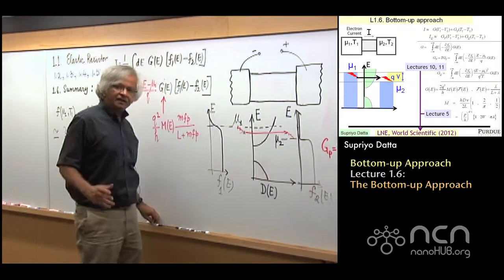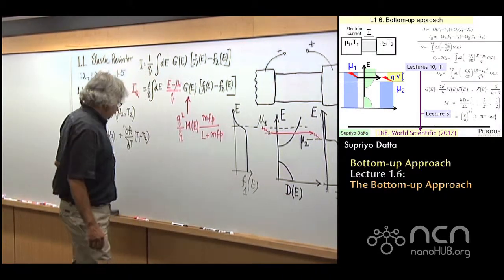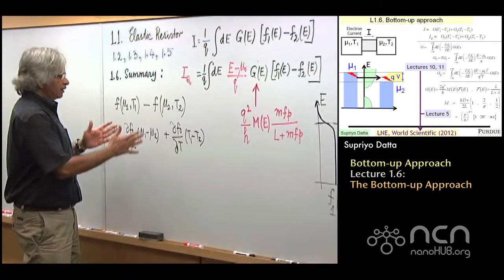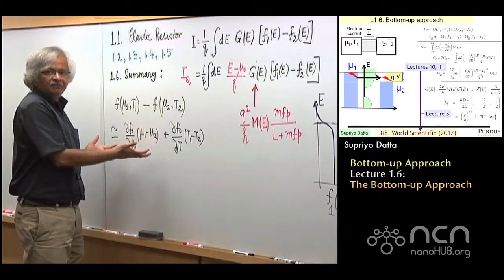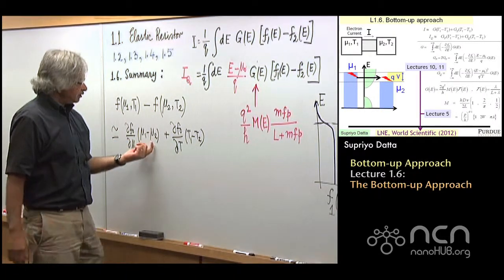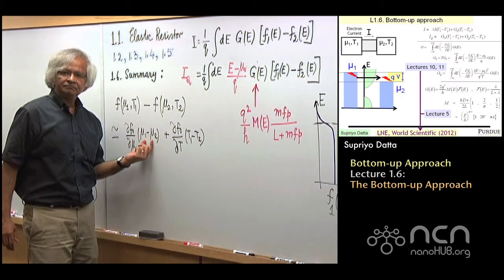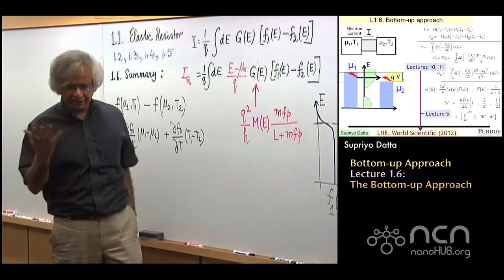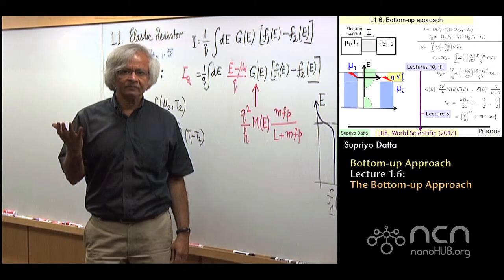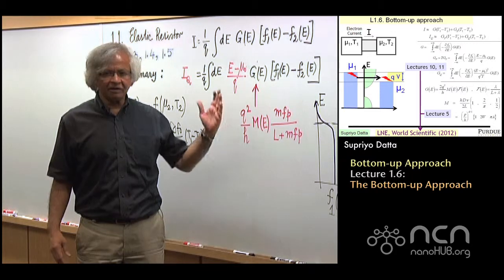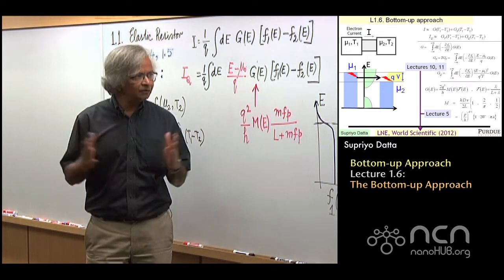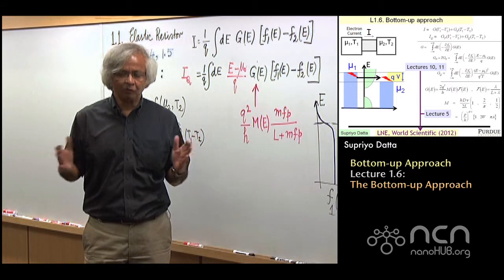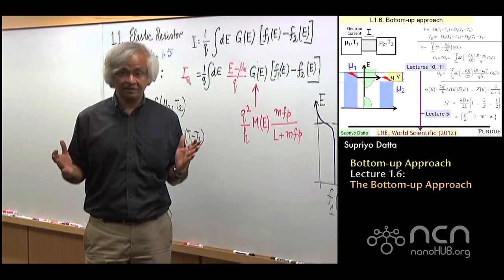This is an approximation that only holds when the applied voltage is small or the applied temperature difference is small. This was crucial to get from this current expression to the linear response expressions. Because of that Taylor series expansion, you have this dF/dE. You might ask, in order for this expansion to be valid, the applied voltage must be less than kT. At room temperature, it has to be like 25 millivolts or so. Does that mean our expressions don't hold if you apply more than 25 millivolts across a conductor?